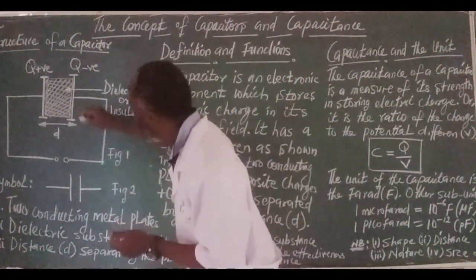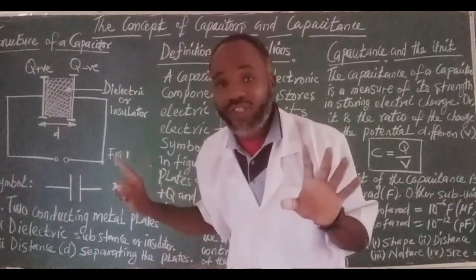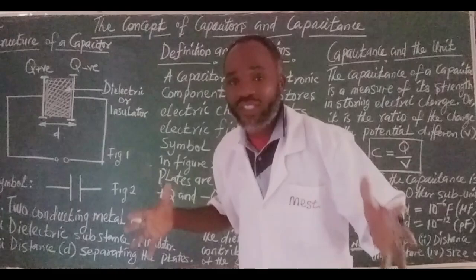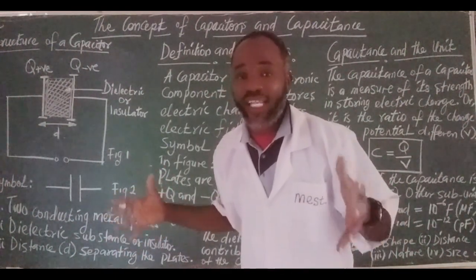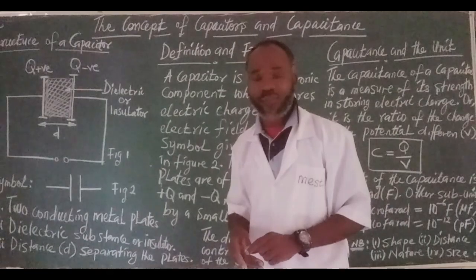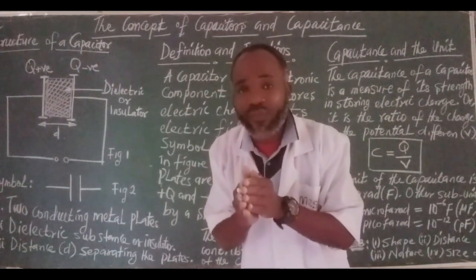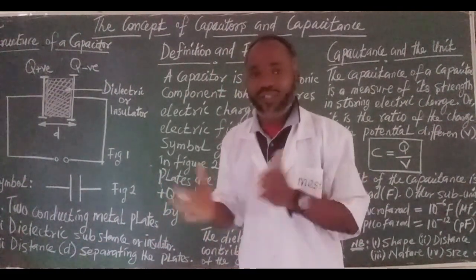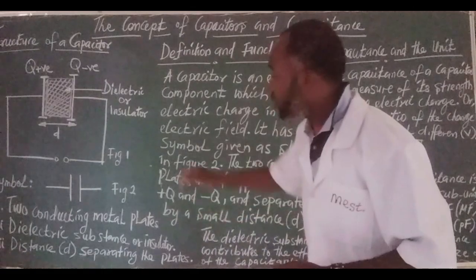Also, we take note of the cross-sectional area of the two plates. The larger the cross-sectional area of the two plates, the bigger or the larger the capacitance of the capacitor. It's just vice versa. Have you understood that?